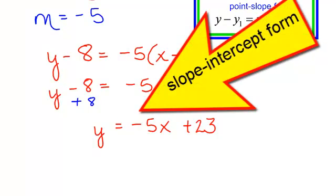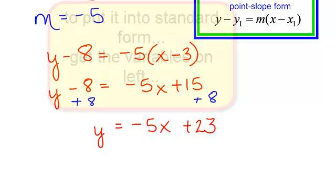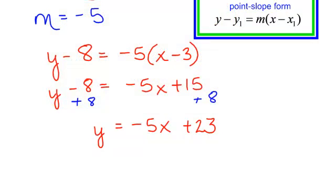If your teacher said, oh, I don't want it in slope-intercept form, I want it in standard form. Standard means make it look really pretty. X and y's are on the left. Put the x first and the y. If there are any fractions, multiply through. Get rid of those fractions. In this case, I have my x on the right. So I would add 5x to both sides.